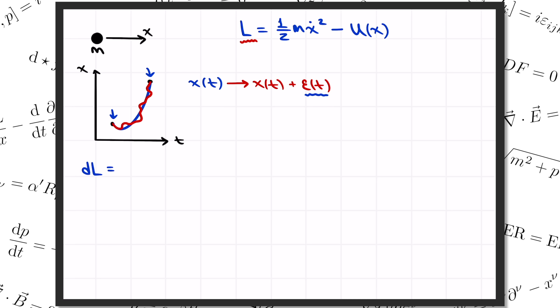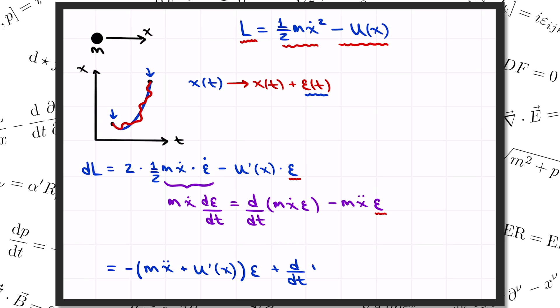So, to get the change in L, first we take the derivative of the kinetic energy term, that gives us 2 times 1/2 m x dot, times the change in x dot, that's epsilon dot. Then from the second term, we get minus u prime of x, times the change in x. Then, in our usual routine for finding the equation of motion, we want to integrate the first term by parts. That means we rewrite m x dot times epsilon dot by dt, as d by dt of the whole thing, m x dot epsilon, minus m x double dot times epsilon. That's going to let us pull out a common factor of epsilon. And so the change in the Lagrangian is minus m x double dot plus u prime of x, all that times epsilon, plus d by dt of m x dot epsilon.